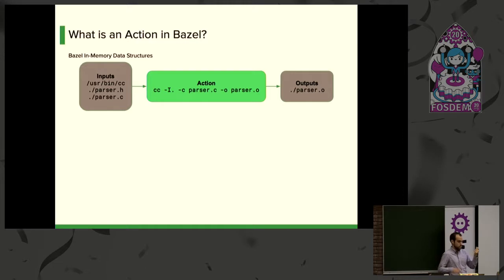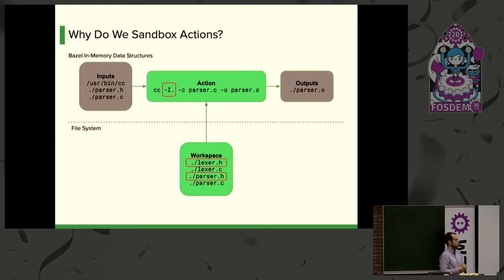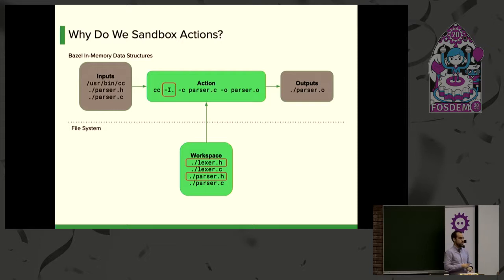Now this works, but look at that dashed capital I. The file system has more things than our in-memory structure. In the same directory where we have parser.h, we might also have another header called lexer.h. There is nothing preventing the compiler from reading that file. If your parser.c contains an inclusion of this header directly or indirectly, and you haven't told Bazel about it, things will not work eventually — because if that undeclared header changes, Bazel doesn't know it has to rebuild this action, and your build will not be correct.